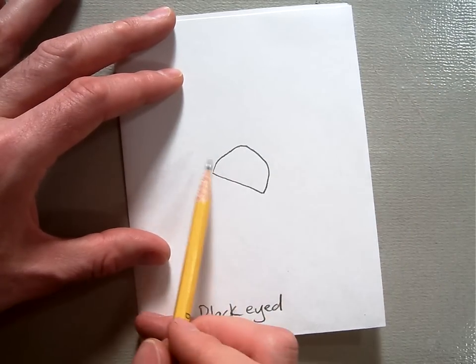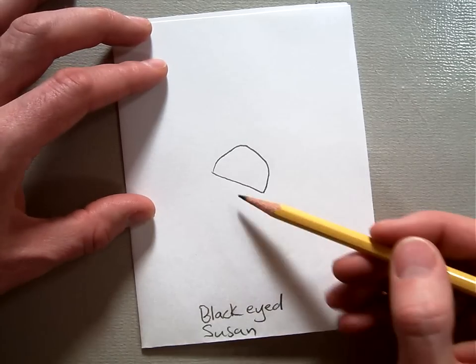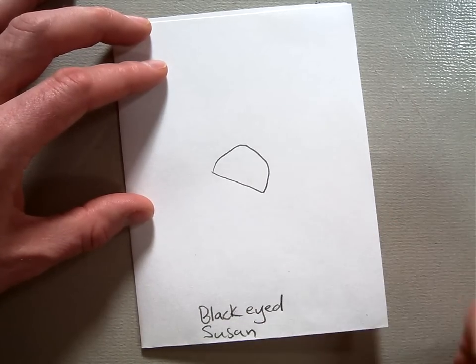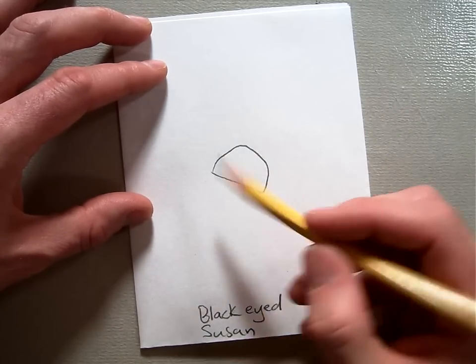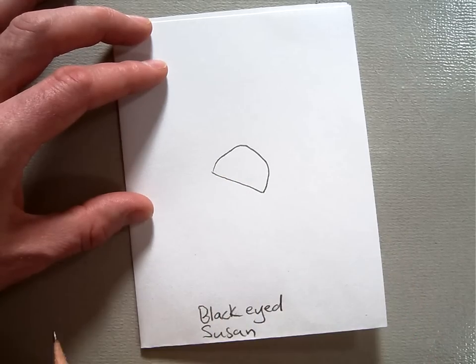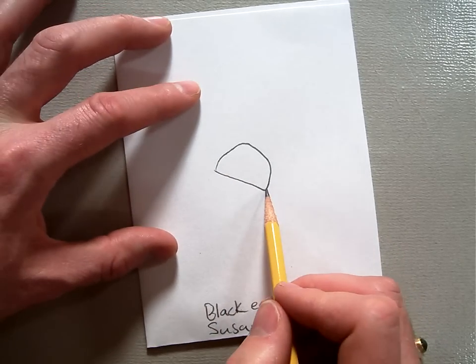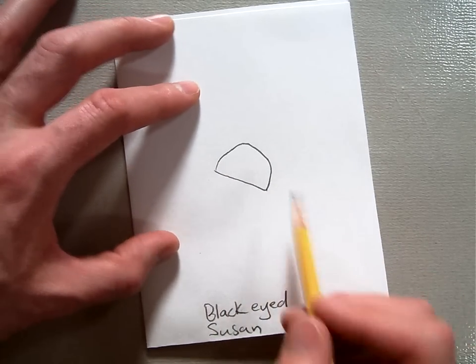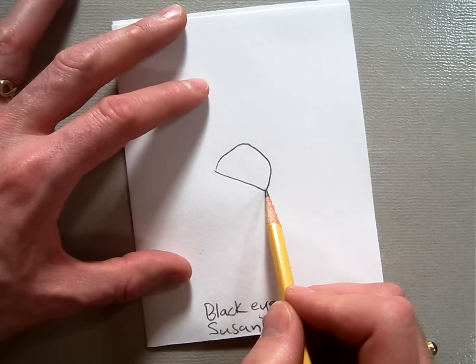But the petals of your black-eyed Susan are going to be kind of drooping down, they're very long and flimsy and they kind of droop down. So what we're going to do is start by making a petal, and all the petals should look a little different because you're viewing them from a different way, right?